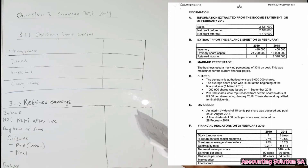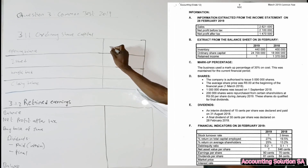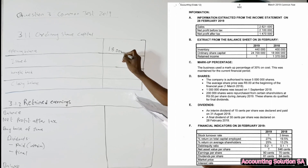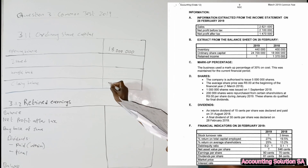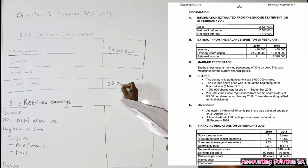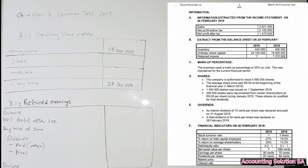For ordinary share capital we can start because we are given an opening and closing balance. The opening balance is 18,000,000 — that is the 2018 amount — and we also have a closing balance of 24,700,000. Very simple, but we are not done.